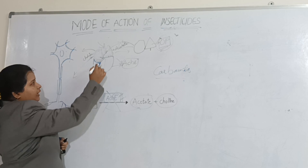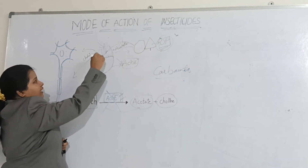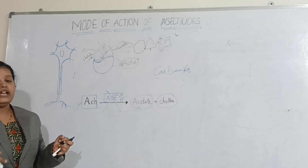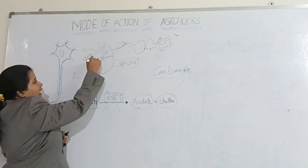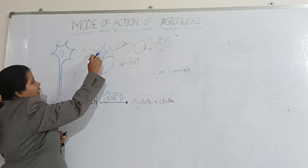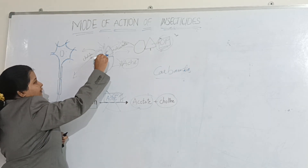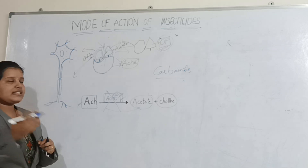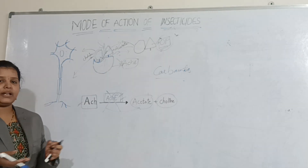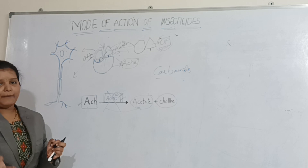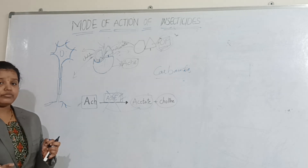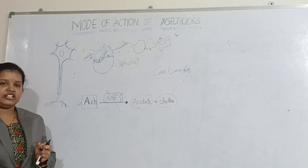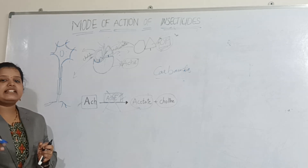If natural acetylcholine binds to the acetylcholinesterase receptor, it will disintegrate into acetate and choline and move away. If carbamate binds, one part disintegrates while the other part temporarily binds, allowing accumulation of molecules. After some time it gets released and the receptor is again open to bind another molecule. That is why carbamate mode of action is called competitive inhibition and also reversible action.